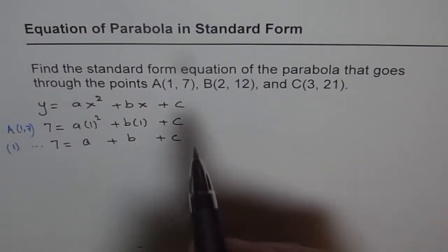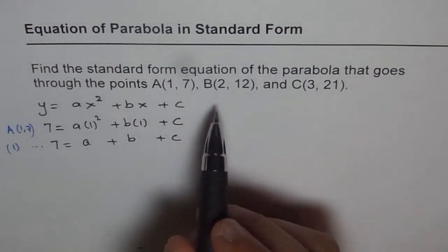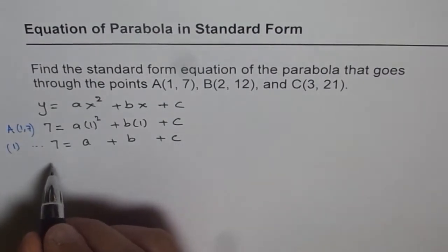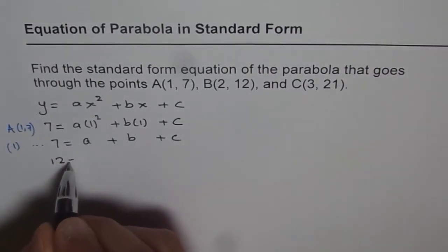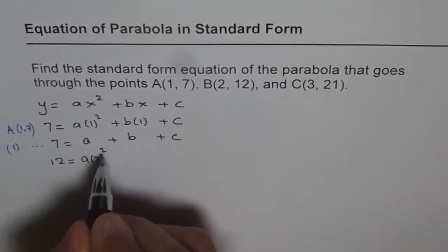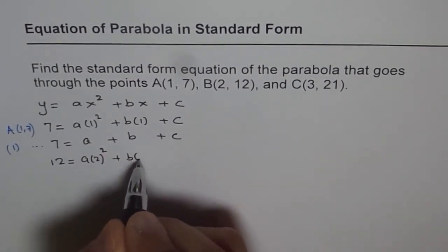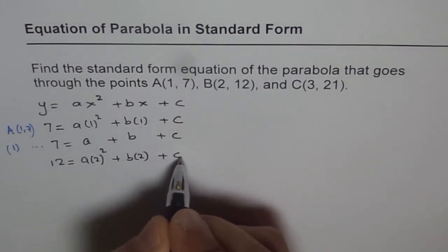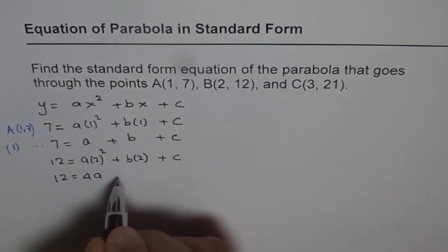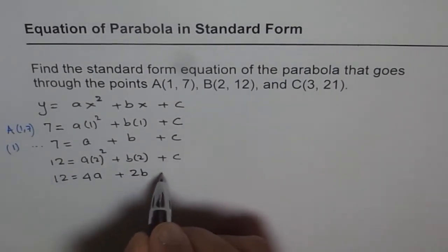Now similarly we can find the second equation by substituting B which has a coordinate point of (2, 12). So 12 is the y value, so we get 12 equals a times 2 square plus b times 2 plus c. So 12 equals 4a plus 2b plus c.